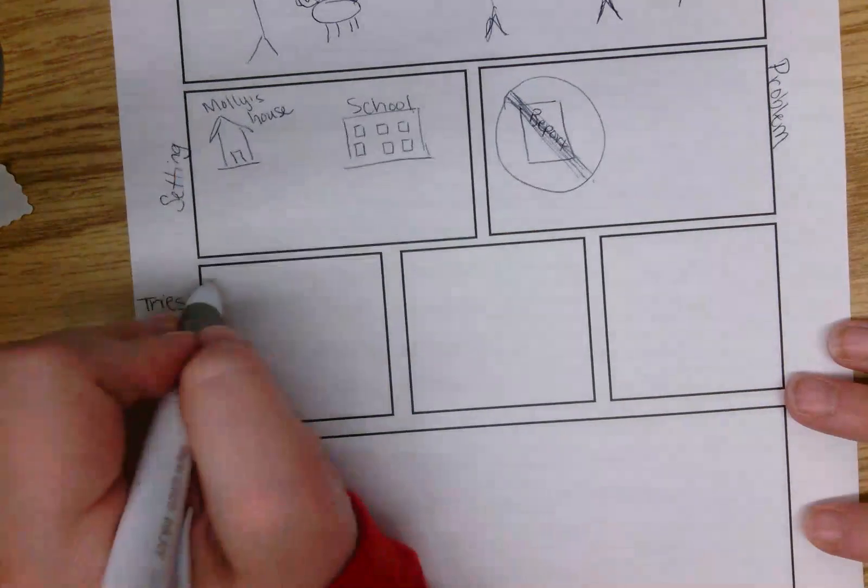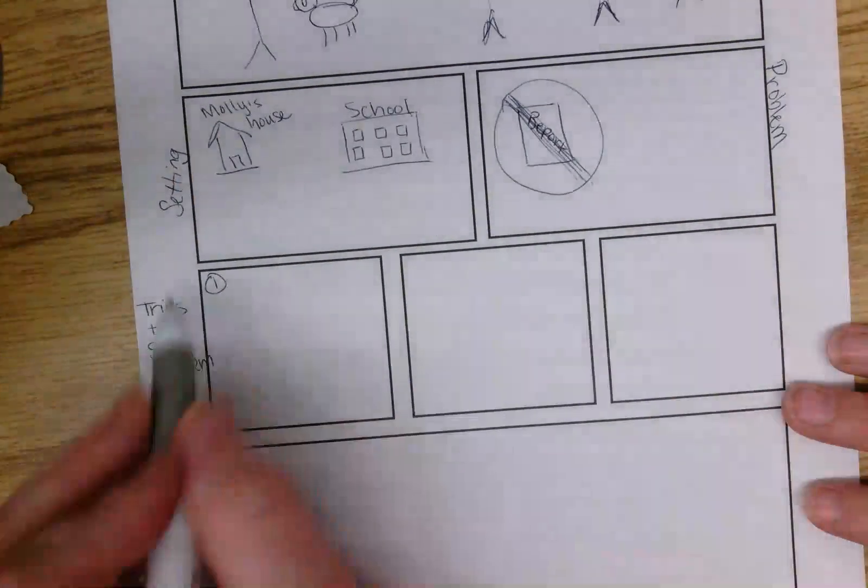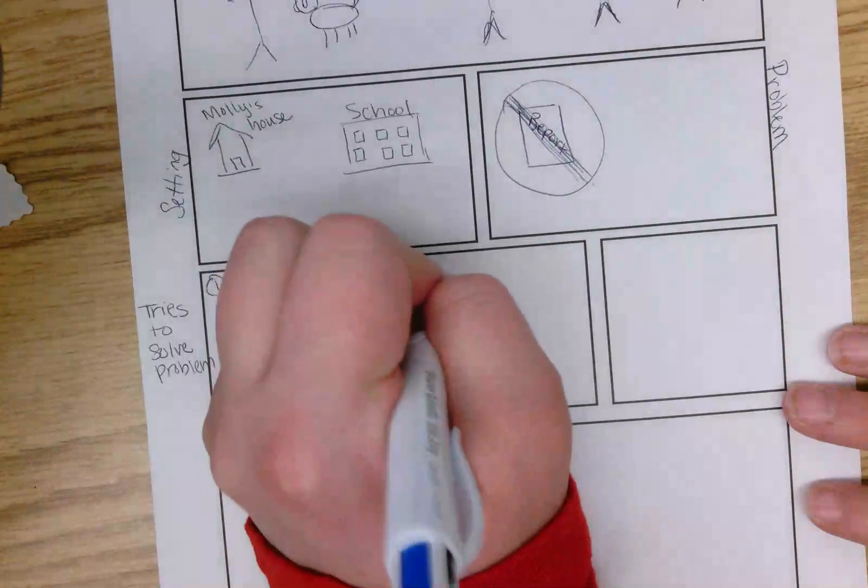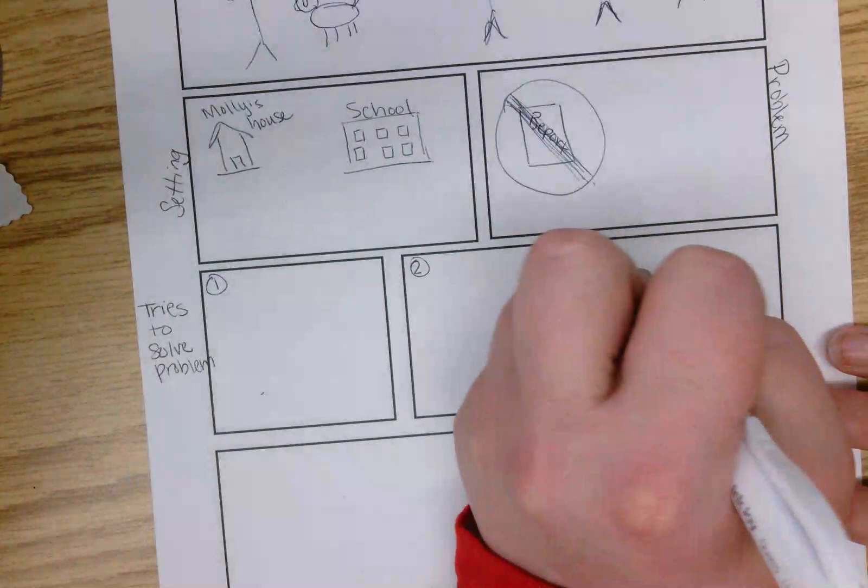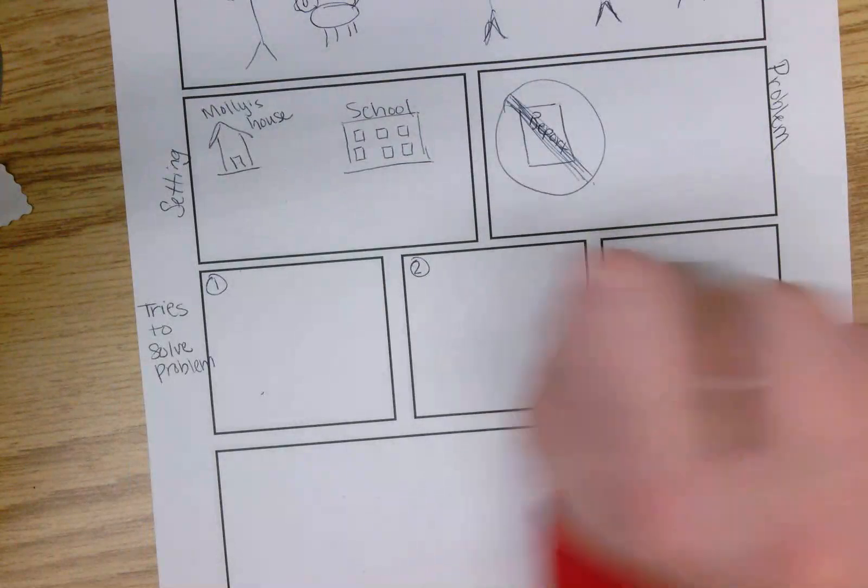Okay, so this is going to be attempt number one, the first thing that she tries to do. This is going to be attempt number two, the second thing that she attempts to do. And then this is going to be the one that works.